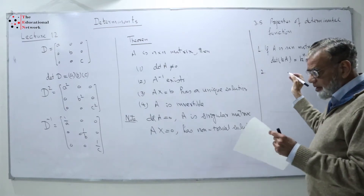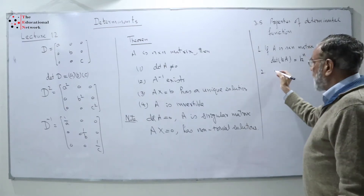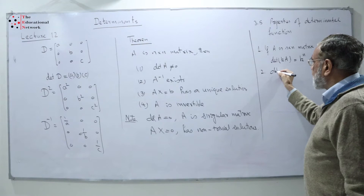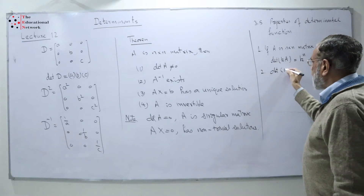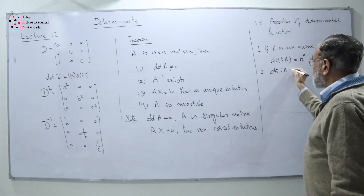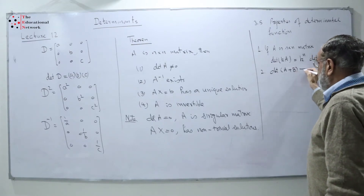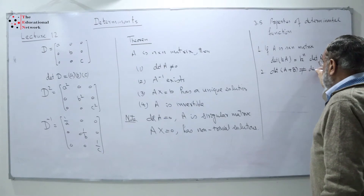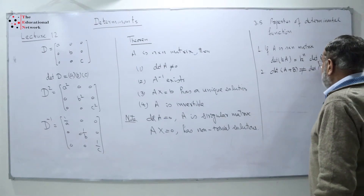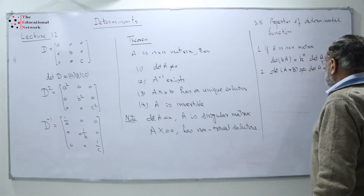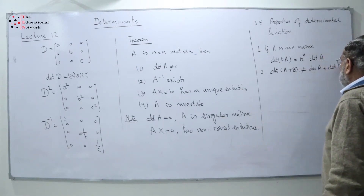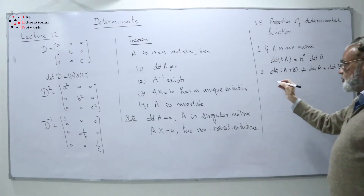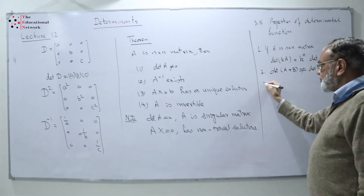The second property: if we have two matrices A and B and find the determinant of A plus B, very interestingly they are not equal to determinant of A plus determinant of B. They are not equal. I will give you an example for this purpose.